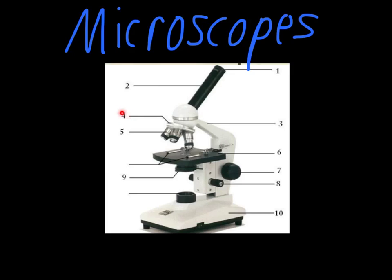Number four is referred to as the revolving nose piece. This allows you to switch between the three different objective lenses. On our microscopes in class, we actually have three different powers on these. The smallest one gives you four times magnification. So the four times here, combined with the ten times from the objective lens, gives you a total of 40.